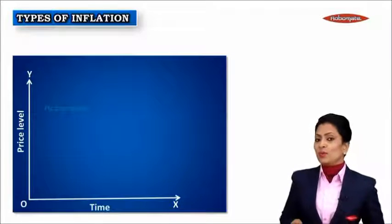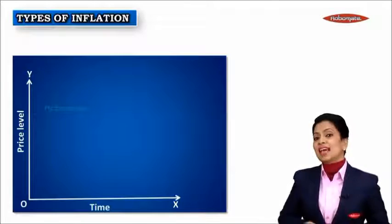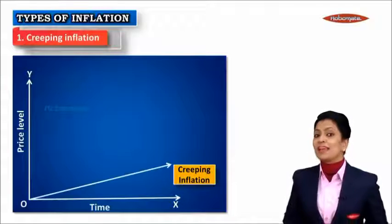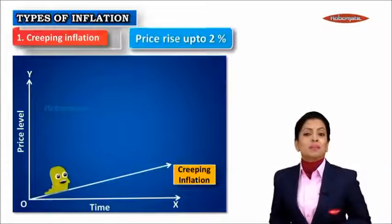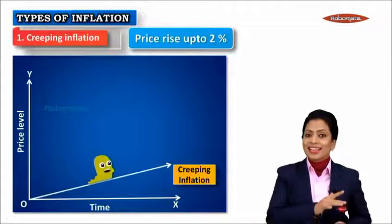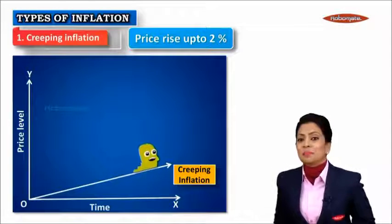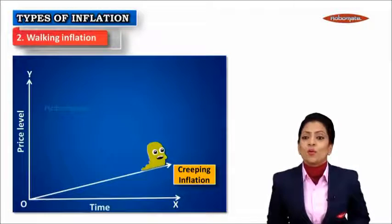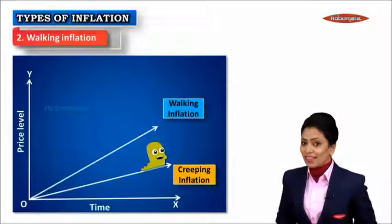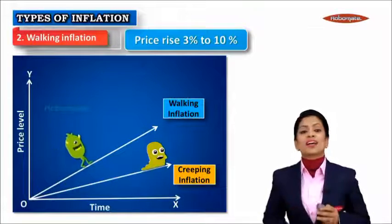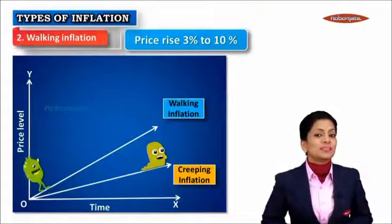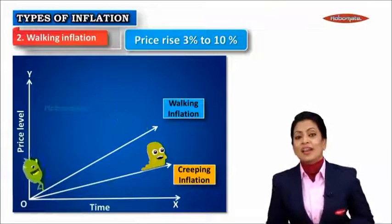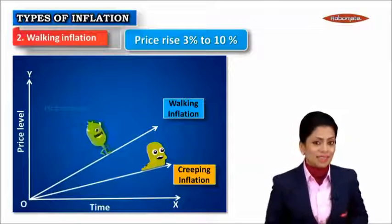Prices rise at different speeds, so let's find out the different types of inflation. The first type is known as creeping inflation — at this time the price monster creeps along at a speed of up to two percent per annum. Another type is walking inflation, during which the price monster walks at a speed of three to ten percent. India today — that is February 2016 — is having a price rise of five point seven six percent, meaning we are having walking inflation.